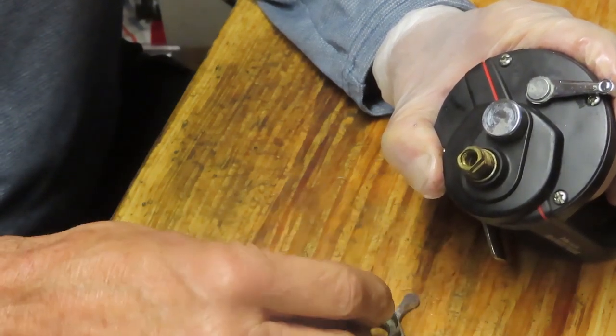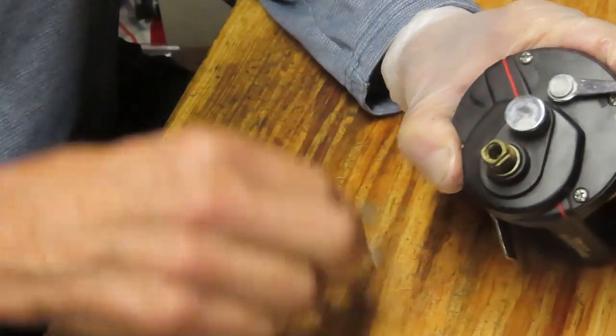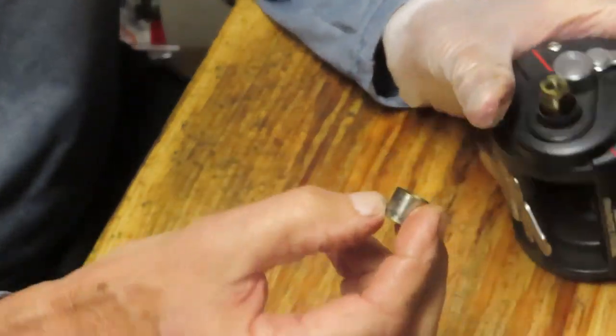We have two tension washers. They're not flat washers. They have a bevel in them or a bend. Don't try to straighten them out.